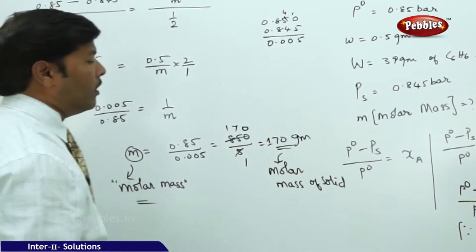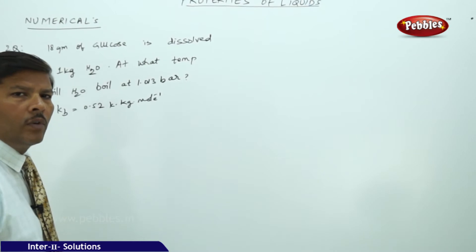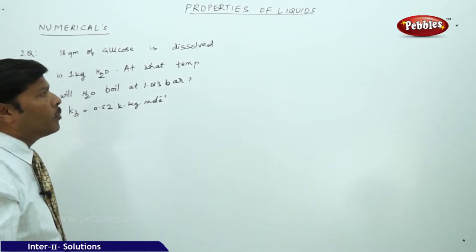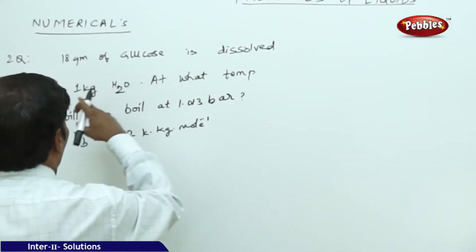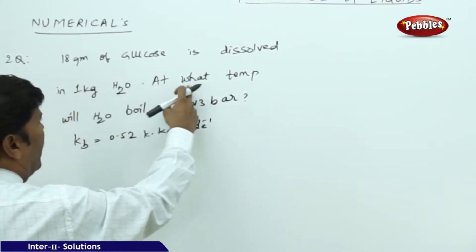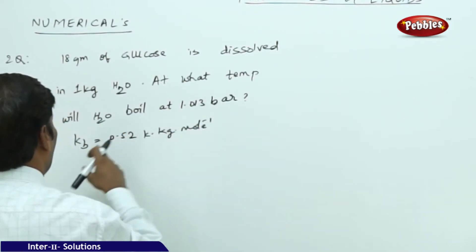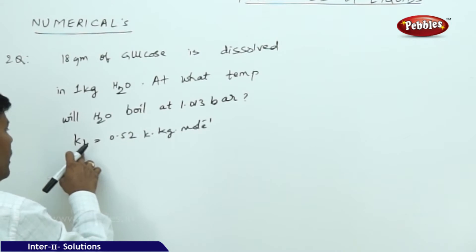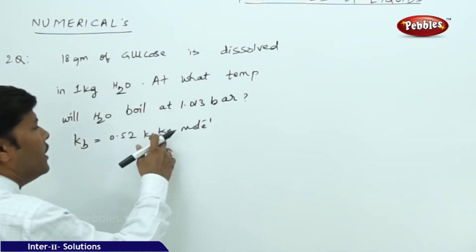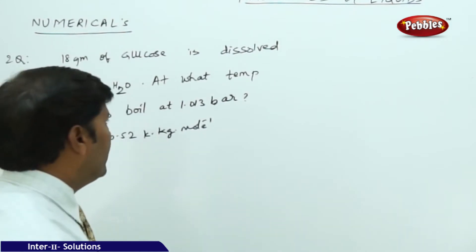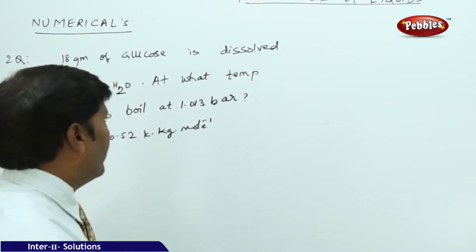So finally we got the molar mass of the solid. Moving to the second numerical in properties of liquids: 18 grams of glucose is dissolved in 1 kg of water. At what temperature will water boil at 1.013 bar, if the elevation in boiling point constant Kb = 0.52 Kelvin kg per mole?